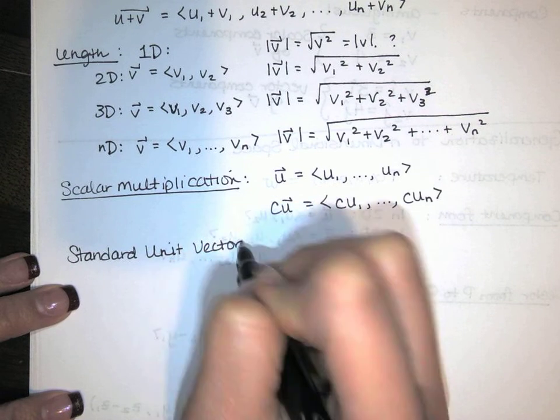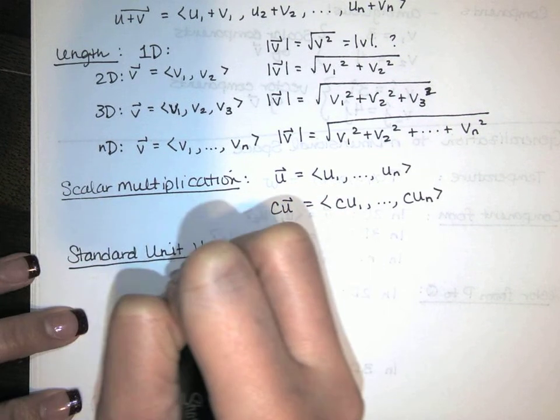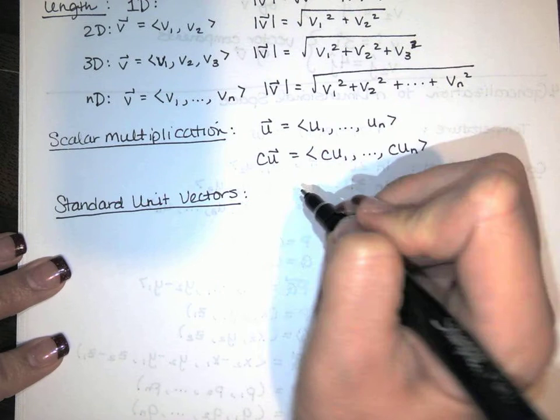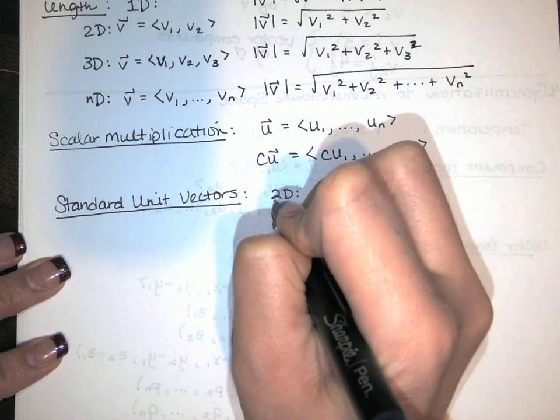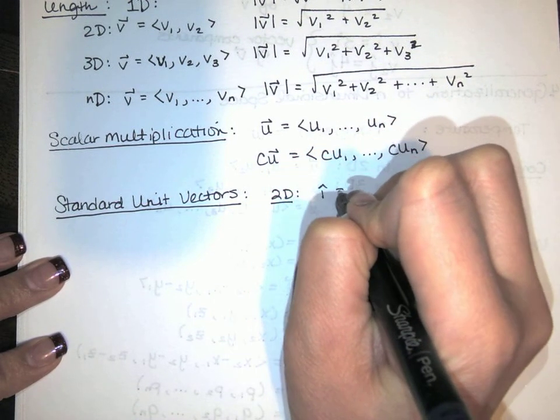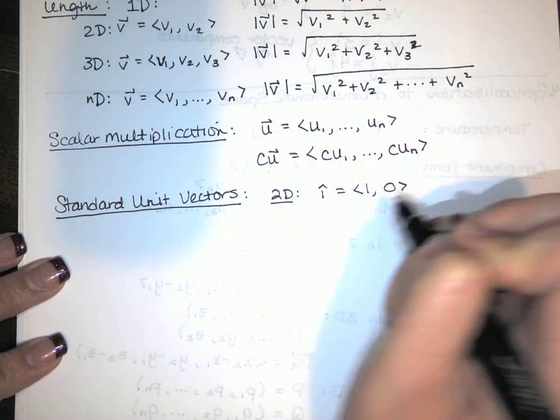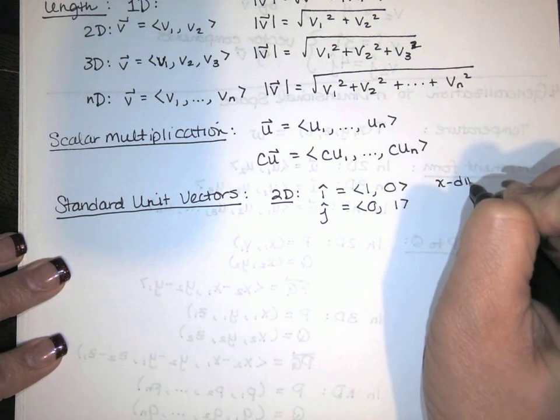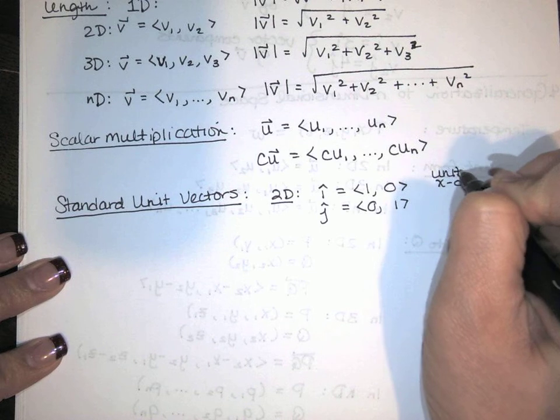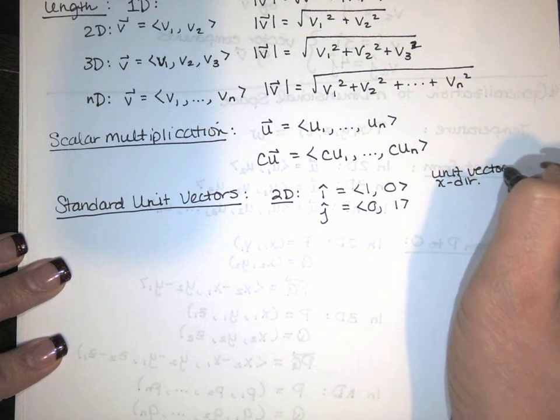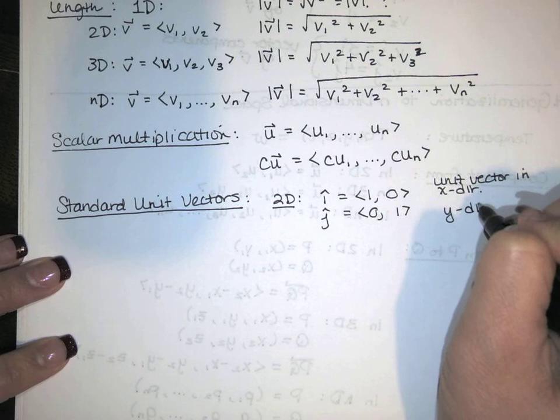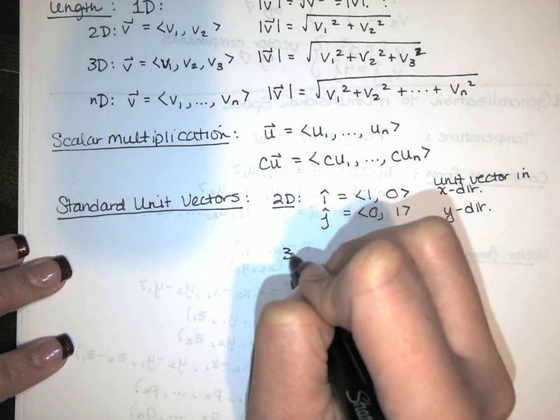We also have standard unit vectors. Beyond 3 dimensions, the notation isn't as standard as we would hope. But in 2D, we've seen our unit vectors, i-hat and j-hat. That's our unit vector in the x-direction. And our unit vector in the y-direction.